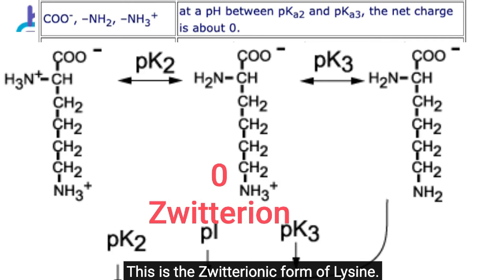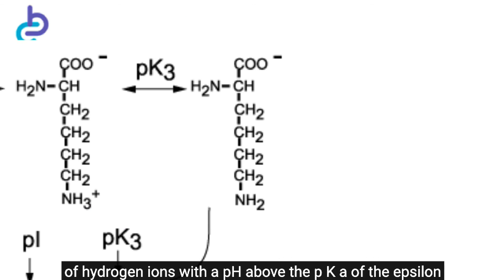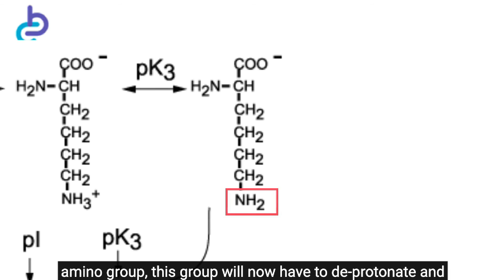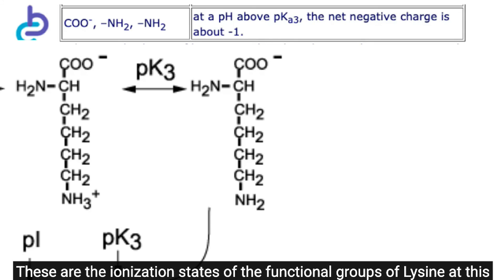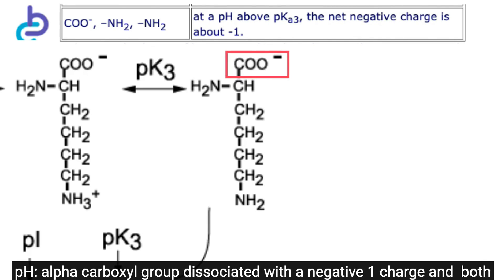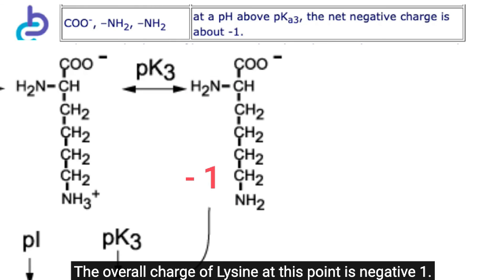Finally, making the solution very basic with pH above the pKa of the epsilon-amino group, this group deprotonates and reverts to an unprotonated NH2 form carrying a neutral charge. The alpha-carboxyl group is dissociated with a -1 charge, and both alpha- and epsilon-amino groups are deprotonated carrying no charges. The overall charge of lysine at this point is -1.